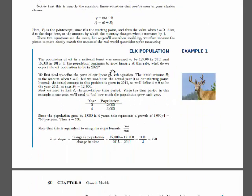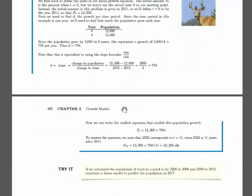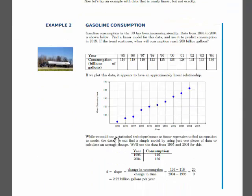So here we do an example with elk population, where we're given an initial population and then we're given a population later on, and then we're asked to make predictions about it. And this is where we have to find that growth rate, D. And so this problem goes through finding D, the growth rate, and then using that to predict, given a point in time, predict the population.